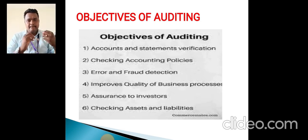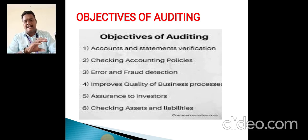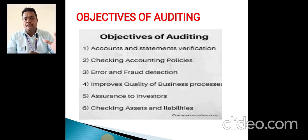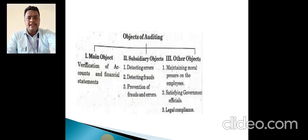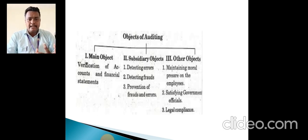Every supporting document and transaction will be checked to determine whether it is true or false, right or wrong — how it is truthful and how it will be evaluated. That is called auditing. The objectives are divided into three categories: main objectives, subsidiary objectives, and other objectives.